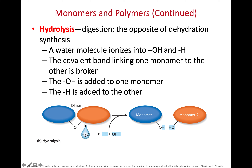This two subunit molecule can have a water molecule added right where there's a covalent bond to an oxygen and another covalent bond, and it breaks it apart. By adding two hydrogen and a hydroxide, or H2O, we have destroyed that covalent bond. We have hydrolyzed that dimer into two separate monomers.